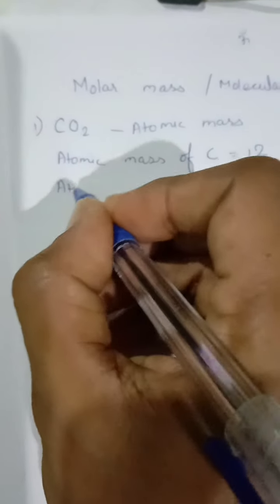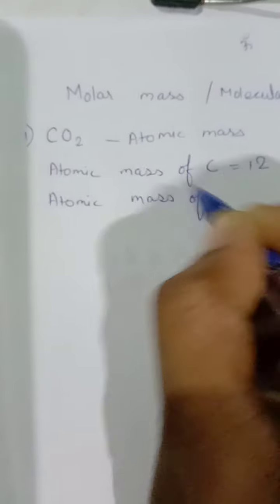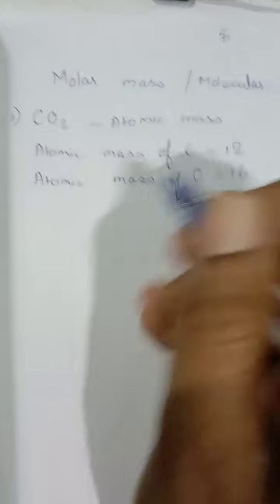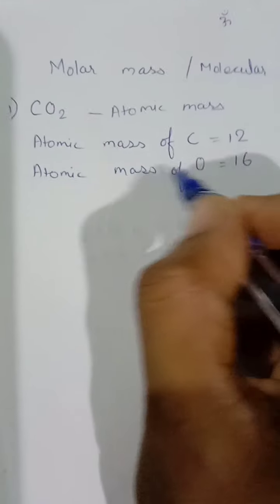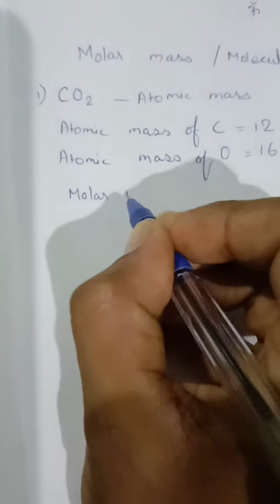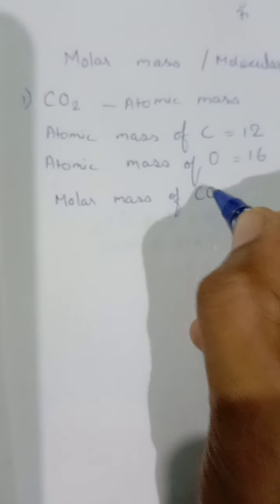Atomic mass of the next element, oxygen, is 16. Now we know the two atomic masses. The molar mass of carbon dioxide equals C plus O times the number of oxygen atoms.